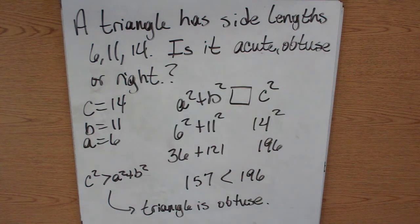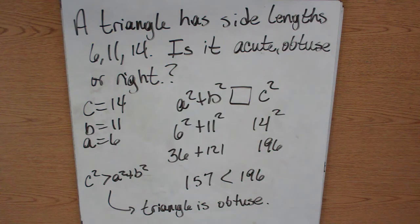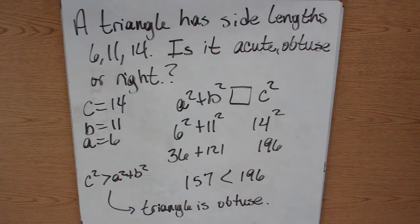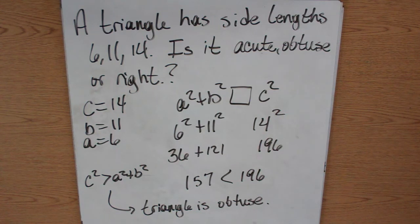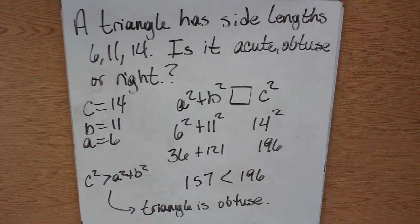This has been your Pythagorean Theorem and its Converse, video 8-1. Make sure you know what a Pythagorean triple is, how to use the Pythagorean Theorem, and how to determine whether a triangle is acute, obtuse, or right using the three side lengths. Watch this as many times as you need to, and make sure you have that written in your notes. See you tomorrow.